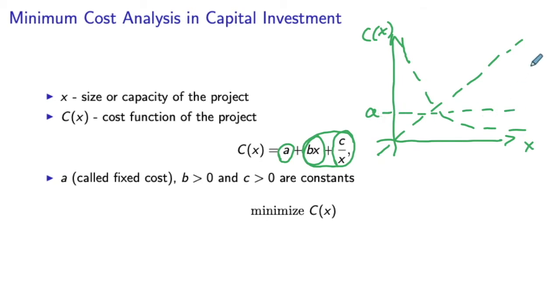When we add all these three together, you will get a shape of this form. You can see that this is a convex function, as we call it. And clearly there is a point where you are going to achieve the minimum cost, and our objective is to find this point x star.